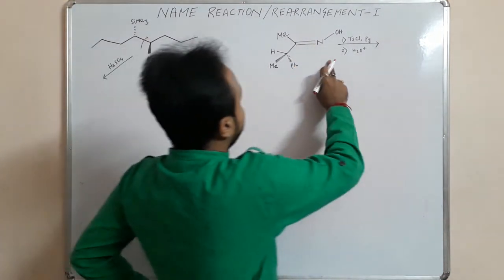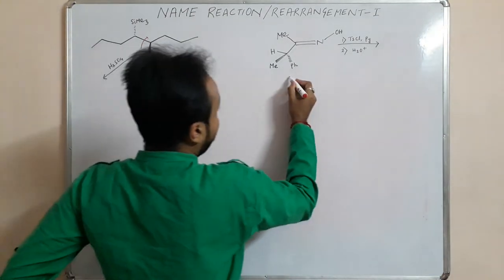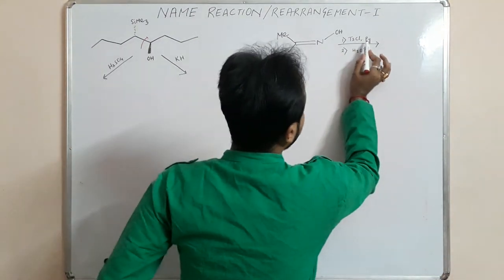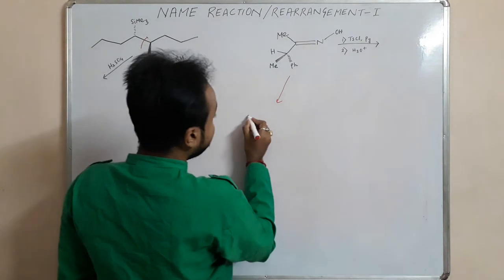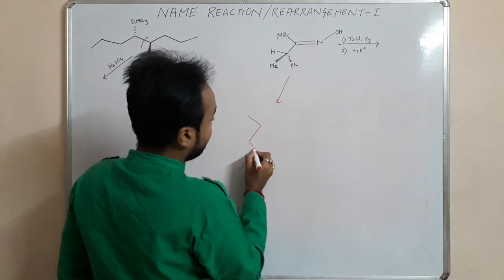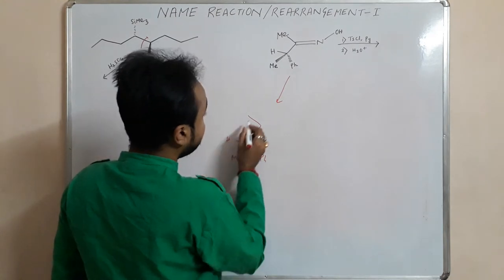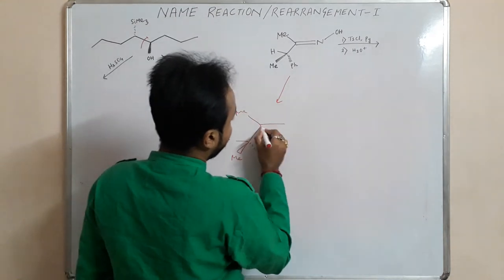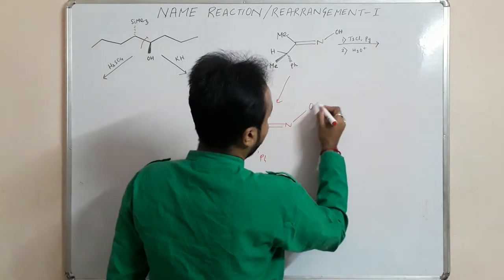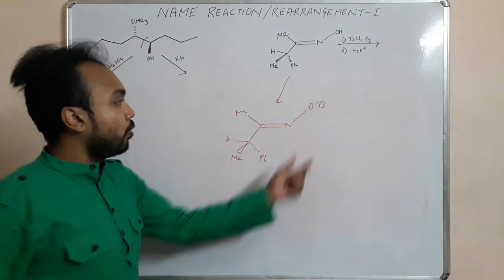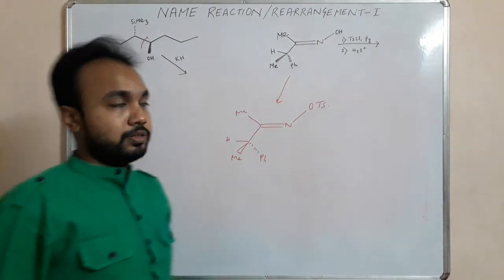So what happens in Beckman rearrangement? You have given this substrate and you have given tosyl fluoride and pyridine. So we have phenyl, this is a methyl, this is hydrogen, this is a methyl, and OTs. Now, OTs is a very good leaving group.